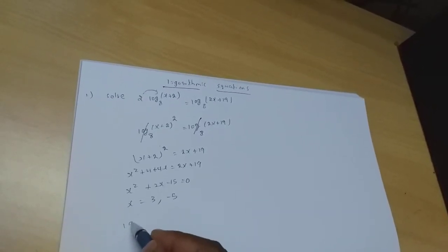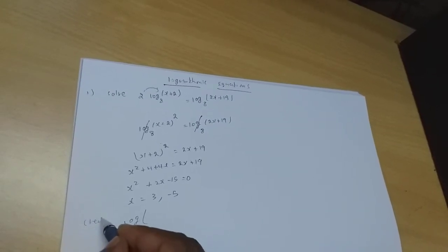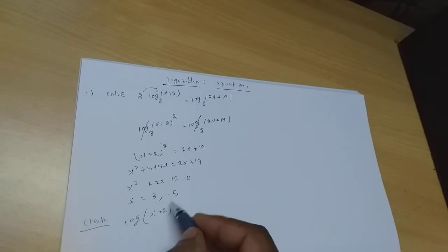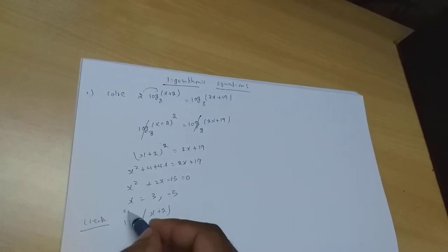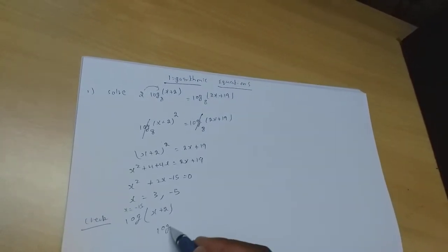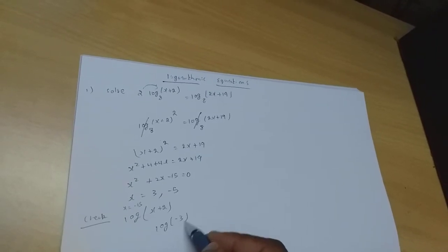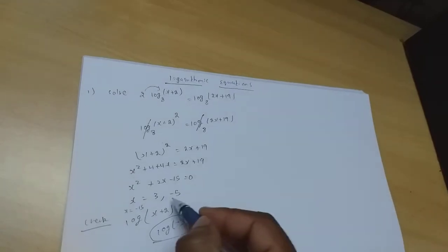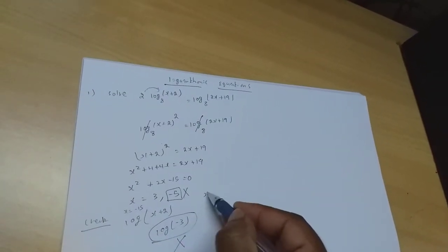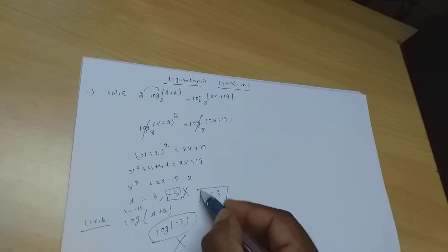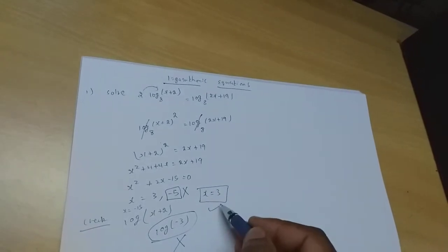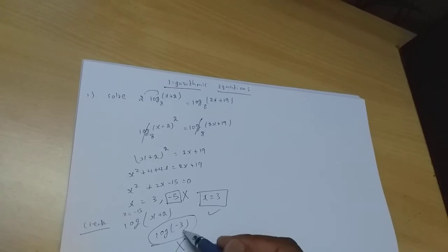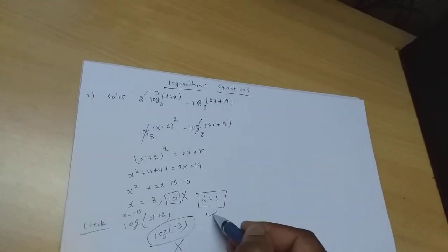Now check: look at log(x+2). If I take x = −5, I get −5+2 = −3, and log of −3 is not defined. So x = −5 cannot be accepted. Only one value for x is 3. In logarithms, if you get a negative value inside the log, that value for x must be rejected.